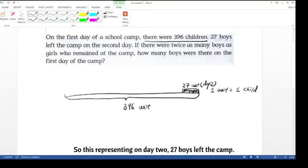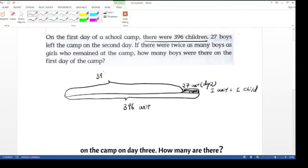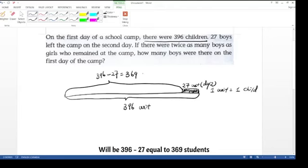So this representing on day 2, 27 boys left the camp. That means I'm going to have this many students on the camp on day 3. How many are there? It will be 396 minus 27 equal to 369 students.